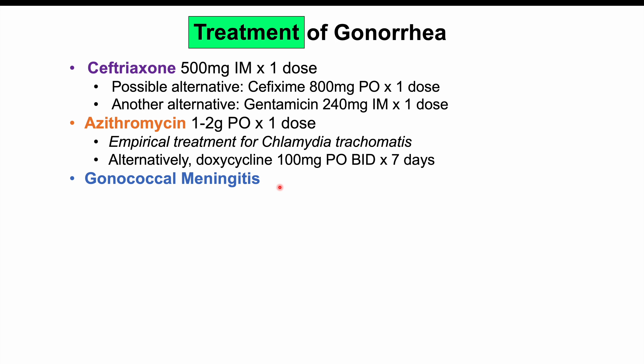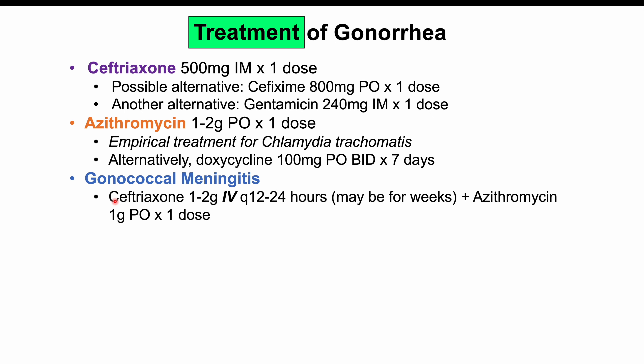For gonococcal meningitis, treatment is ceftriaxone 1–2 grams IV every 12–24 hours, requiring hospitalization for potentially many weeks depending on severity, plus azithromycin 1 gram PO to address chlamydia.